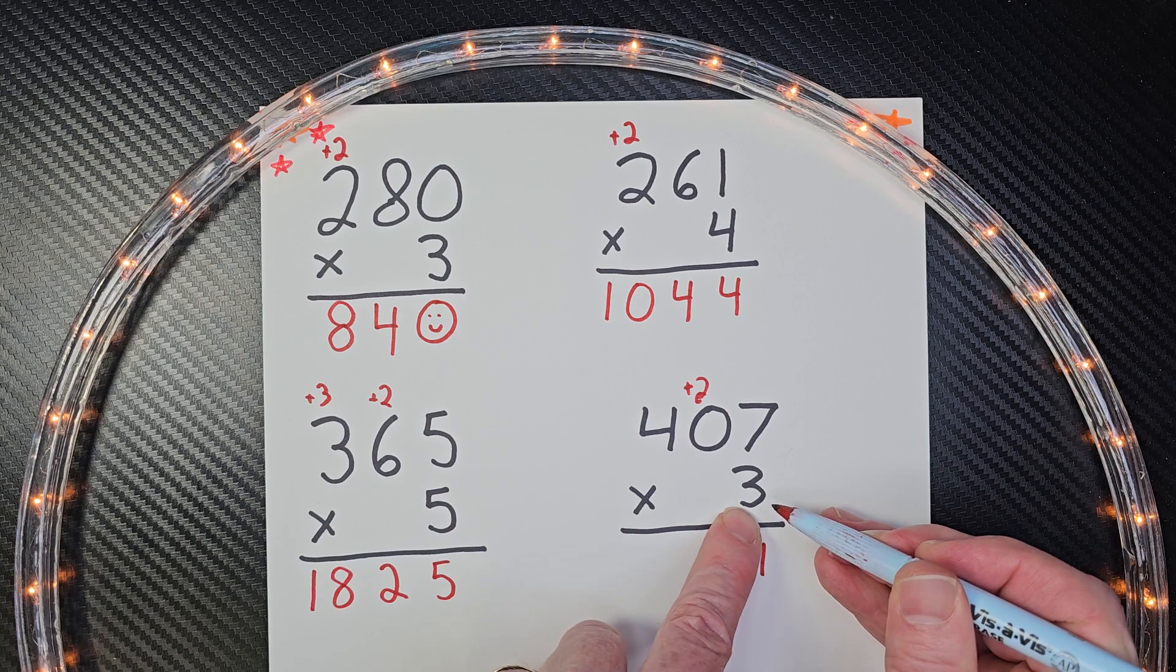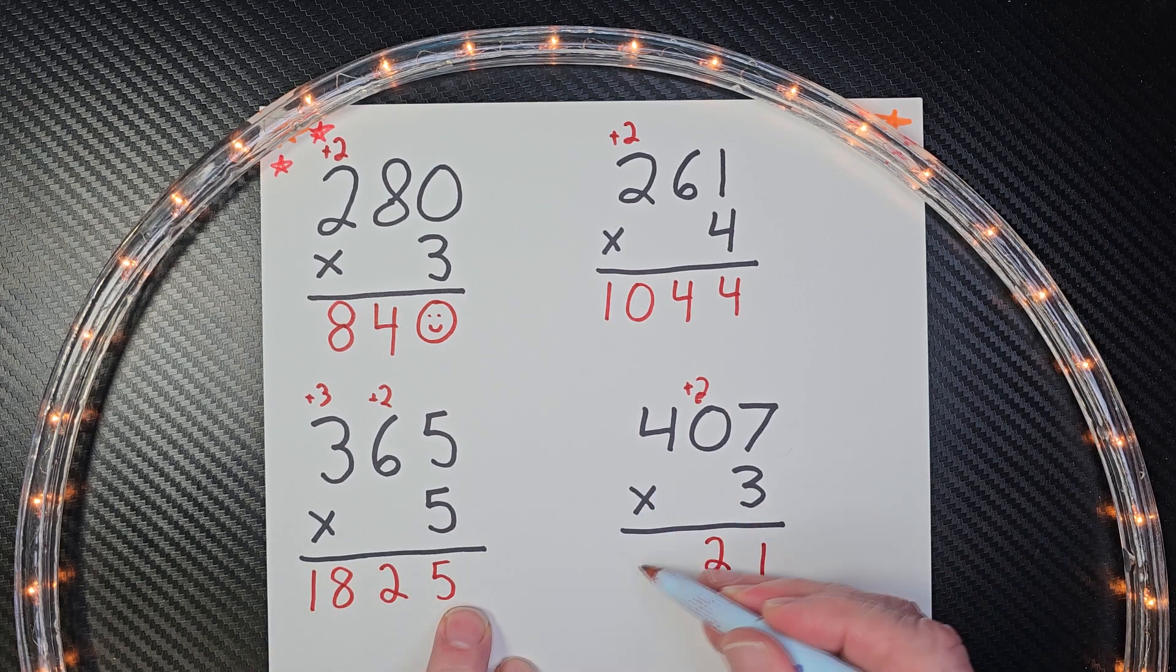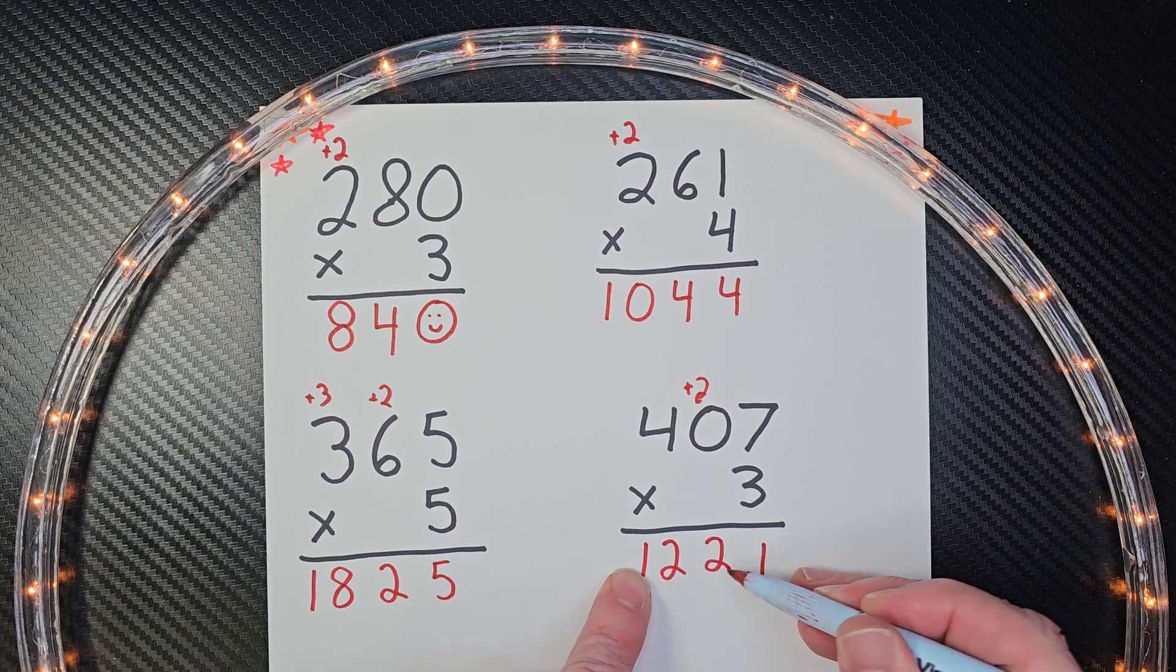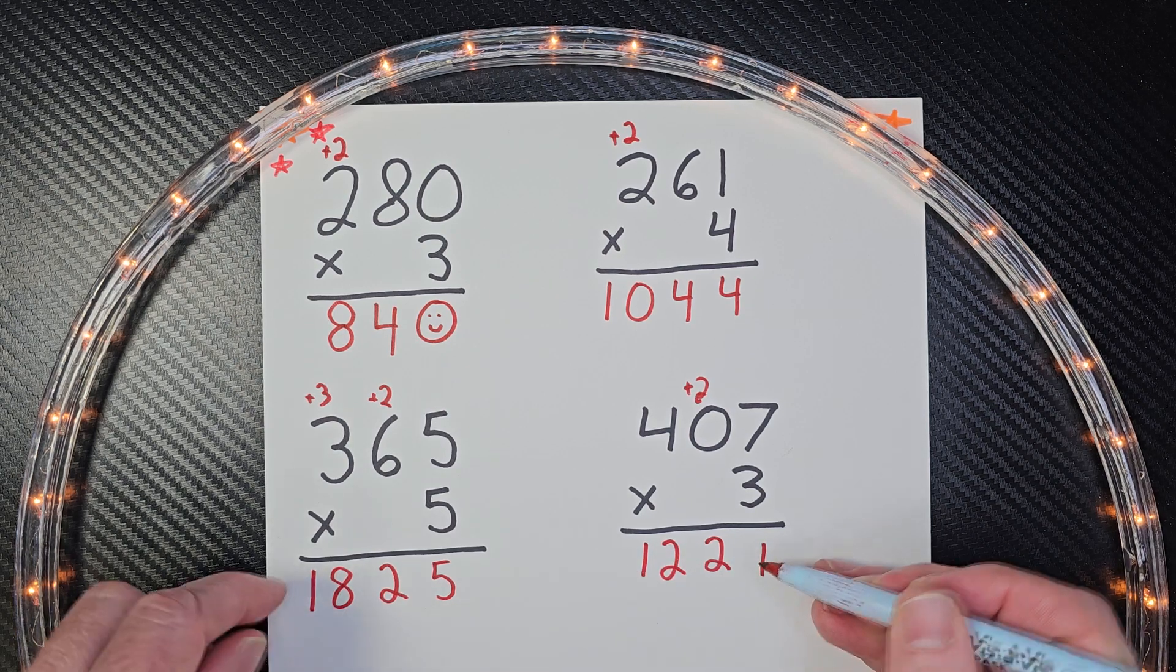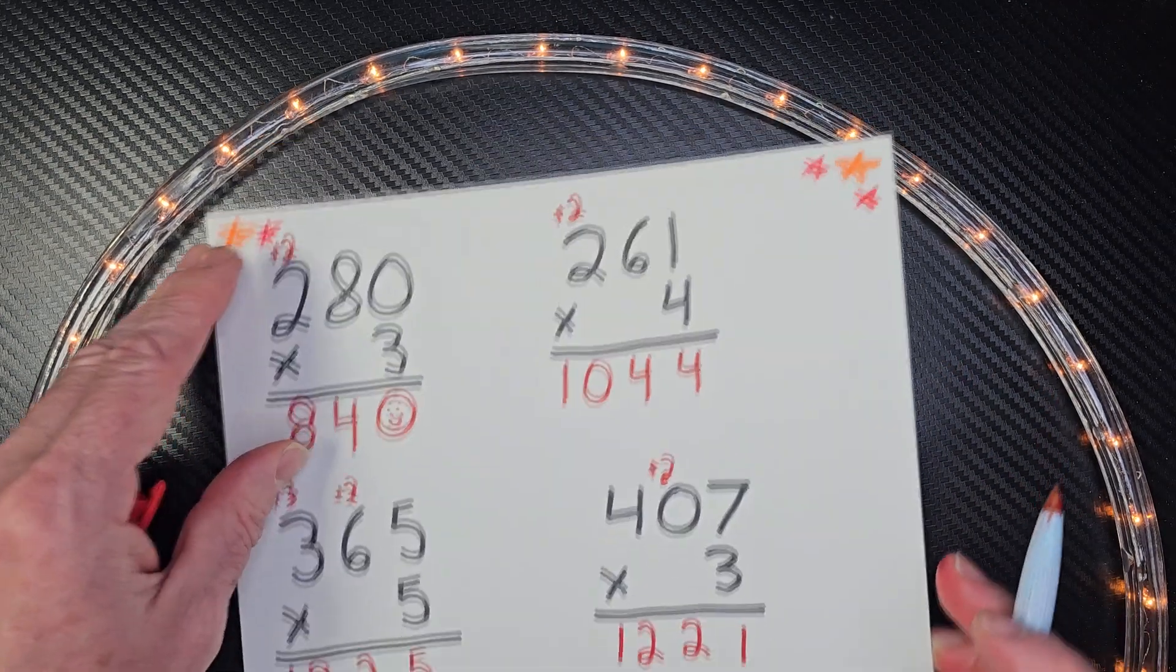And then we're ready to add, or we're ready to multiply. Three times four is 12. So the answer is 1221. Now don't leave yet. I have a challenging problem at the end.